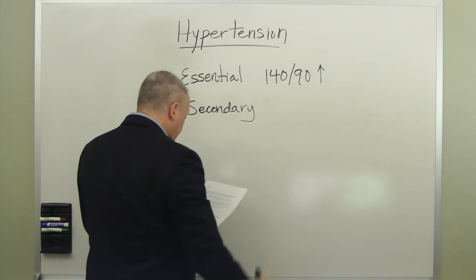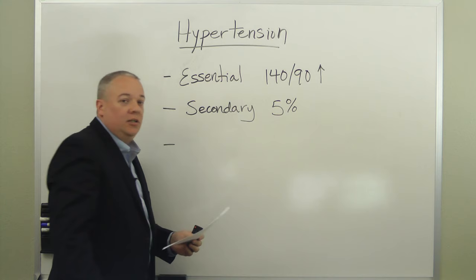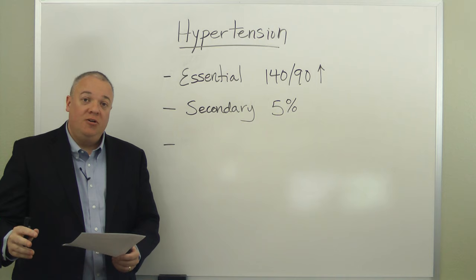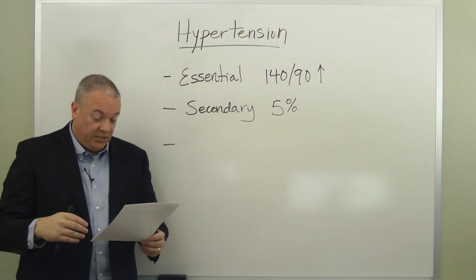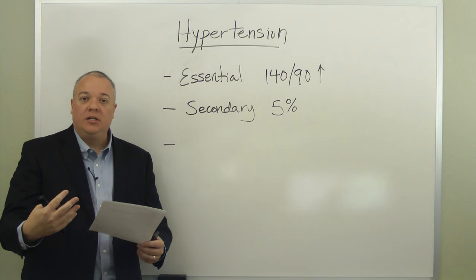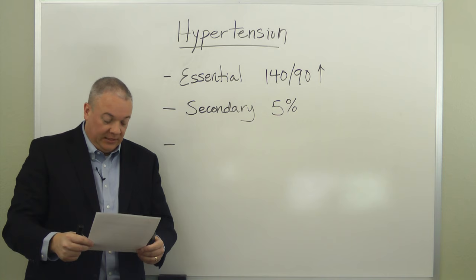Secondary hypertension affects only about 5% of those who have hypertension. It is usually due to other medical conditions such as renal disease, renal artery stenosis, aldosteronism, and pheochromocytoma.